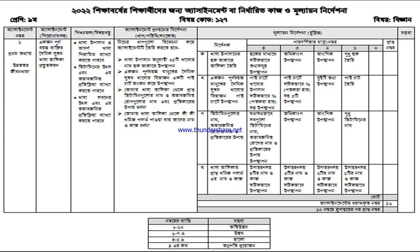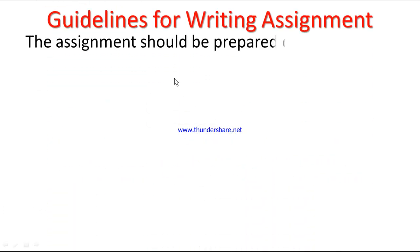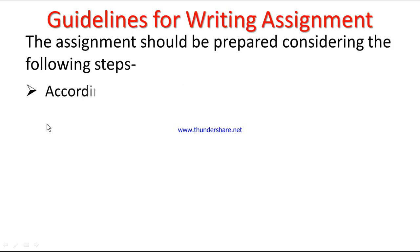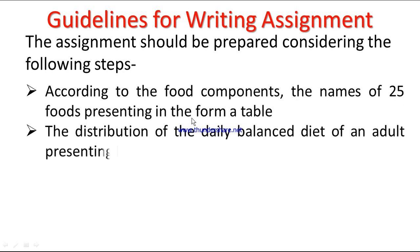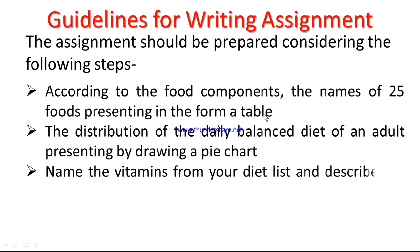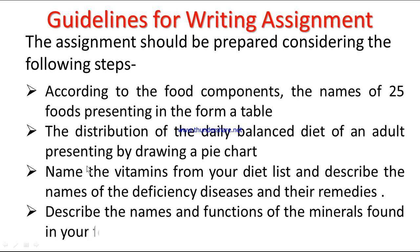The assignment should be prepared considering the following steps: according to the food components, list the names of 25 foods in the form of a table; show the distribution of the daily balanced diet of an adult by drawing a pie chart; name the vitamins from your diet list and describe the deficiency diseases and their remedies; and describe the names and functions of the minerals found in your food list.